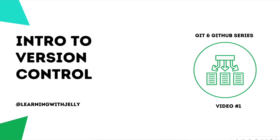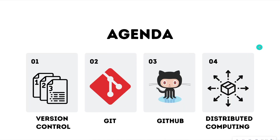For video one, we're going to have an intro to version control. Other videos are going to talk about how to set up a local repo using Git, how to connect your local repo to GitHub, how to create a branch in Git, how to fix a merge conflict, and all of those great things. We're going to start from the fundamentals, so if you're new to Git or a beginner just starting out, this playlist is definitely for you. Our agenda for today is we're going to talk about what version control is, what Git and GitHub actually are, and then the concept of distributed computing.